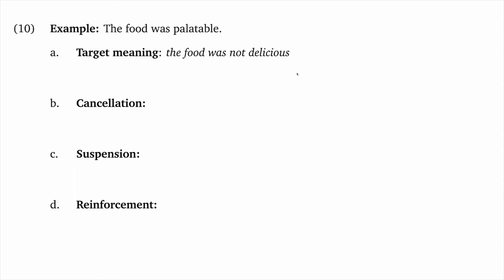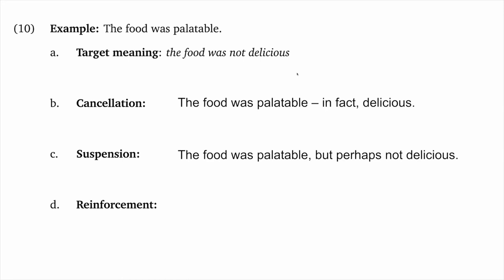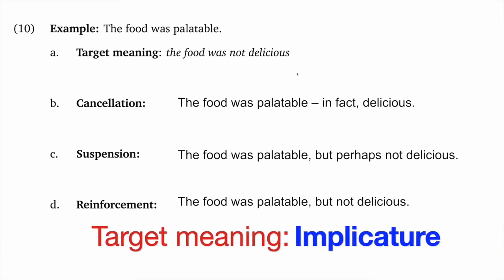I've left the rest of these examples blank — I hope you can fill them out on your own. Let's do the first one though. I would expect it to be like our 'good/excellent' example, but very low scalar terms like 'decent' and 'palatable' can behave a bit oddly, so you should do the tests in an open-minded way. Perhaps 'palatable' is trending toward being outright negative. For cancellation: 'The food was palatable, indeed delicious' — I think I can make that sound okay. For suspension, it could be hard to motivate since it's about one's personal experience, but I think it works. For reinforcement: 'The food was palatable but not delicious' — no sense of redundancy, so I would tentatively conclude that our target meaning is an implicature.